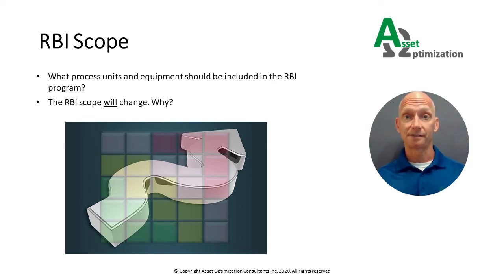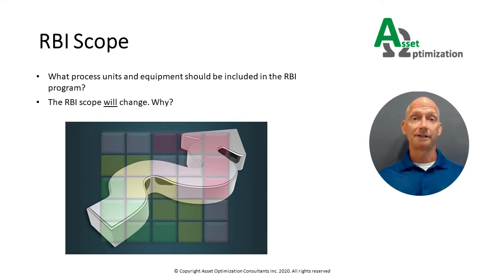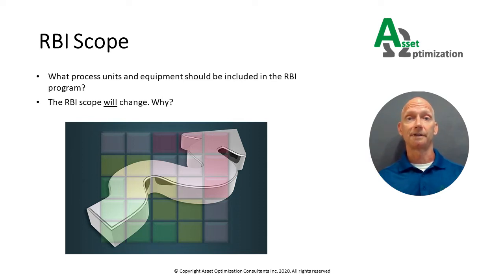This will include determining the process units, the equipment types, and the specific equipment items to be included. Your initial RBI scope will change, so be prepared to adjust your project plan accordingly. Some of the most common reasons that the scope will change include the initial equipment list or asset register may be inaccurate due to being out of date or equipment not being classified correctly. As the project progresses, the RBI team may choose to add additional covered processes. Also, equipment may be removed for various reasons where either the value of RBI cannot be realized or RBI is not allowed by regulations.